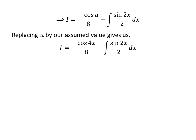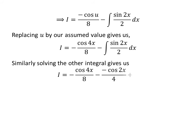Now, let us substitute u by its value assumed earlier. So, i is equal to minus cosine of 4 times x upon 8, minus the integral of sine of 2 times x upon 2 with respect to x. Similarly, we can solve the integral of sine of 2 times x upon 2 with respect to x in the same way. So, we get i is equal to minus cosine of 4 times x upon 8, minus minus cosine of 2 times x upon 4, plus C. Capital C is the arbitrary constant of the indefinite integral. Never forget to add this constant in the end.